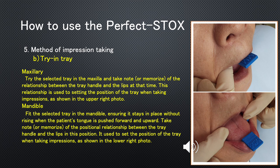Method of Impression Taking. B. Tray Fitting — Maxillary: Try the selected tray in the maxilla and take note of the relationship between the tray handle and the lips at that time. This relationship is used to set the position of the tray when taking impressions, as shown in the upper right photo.